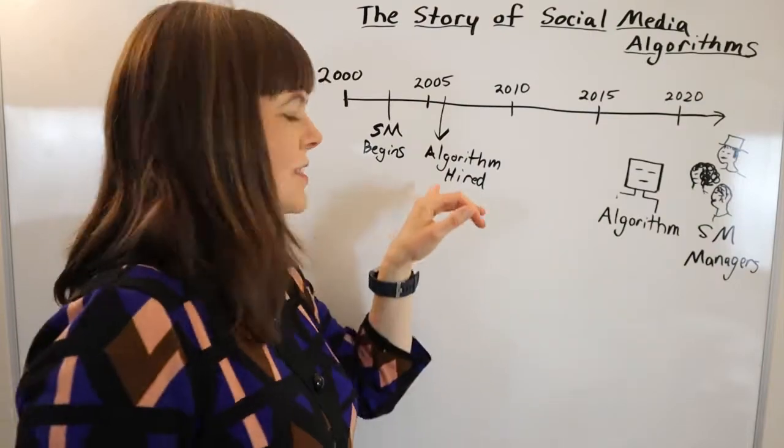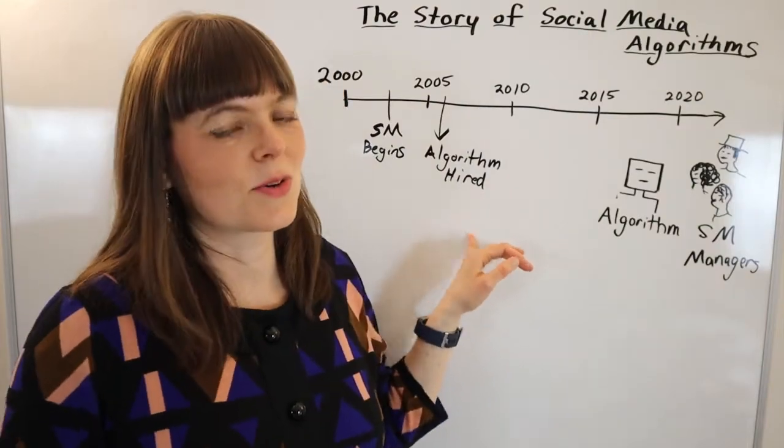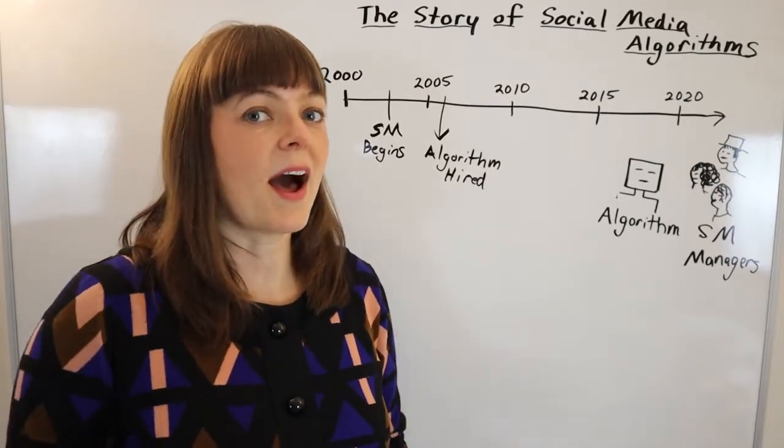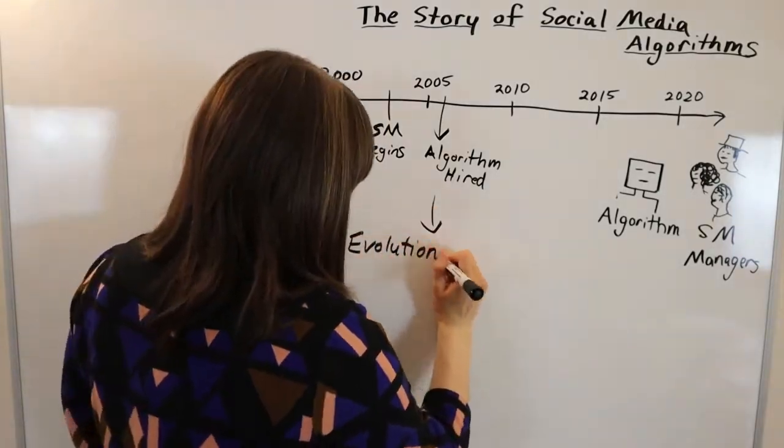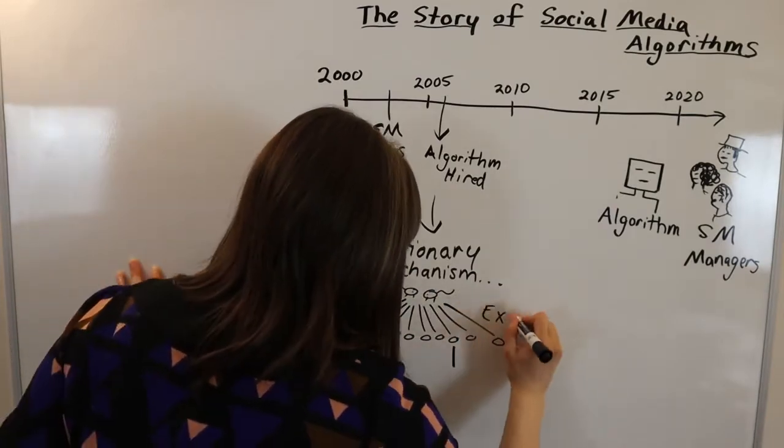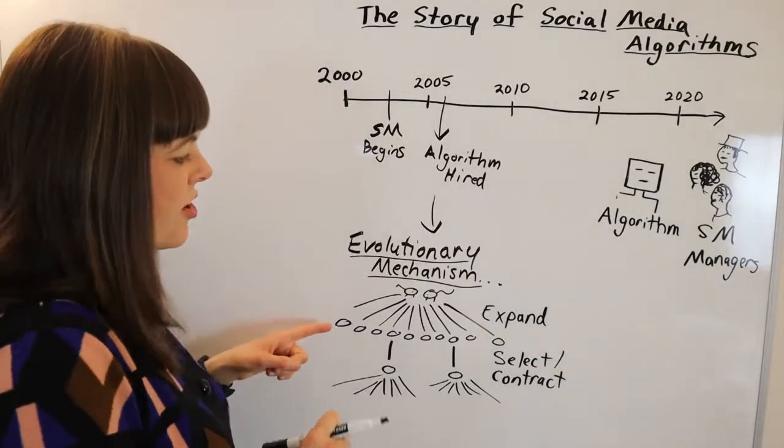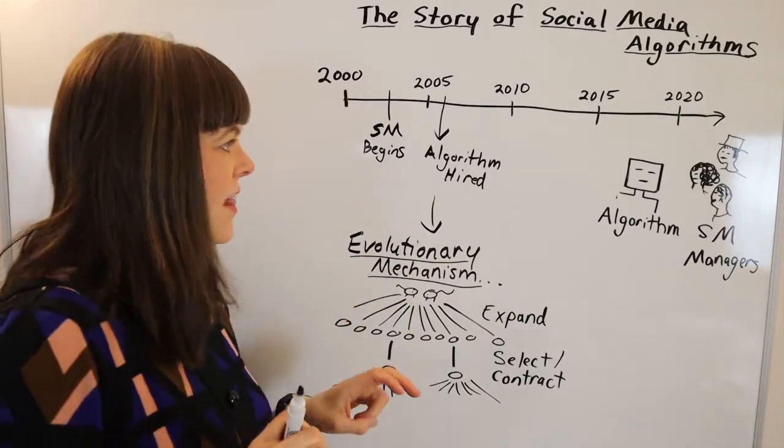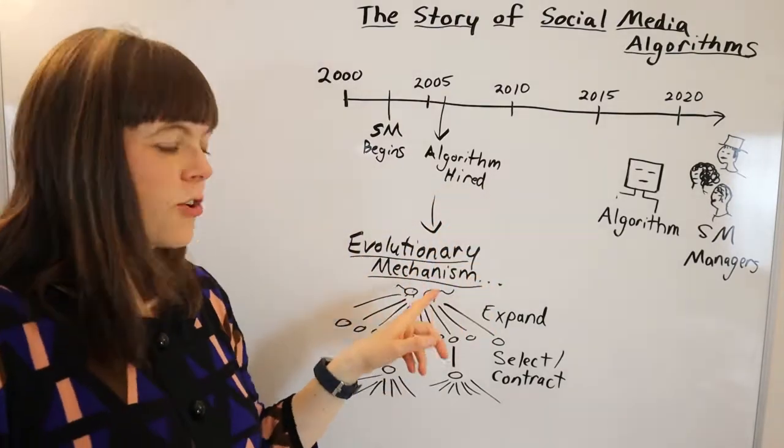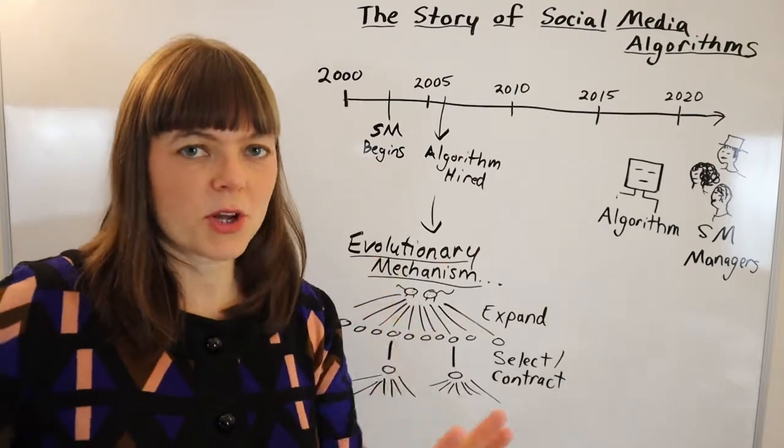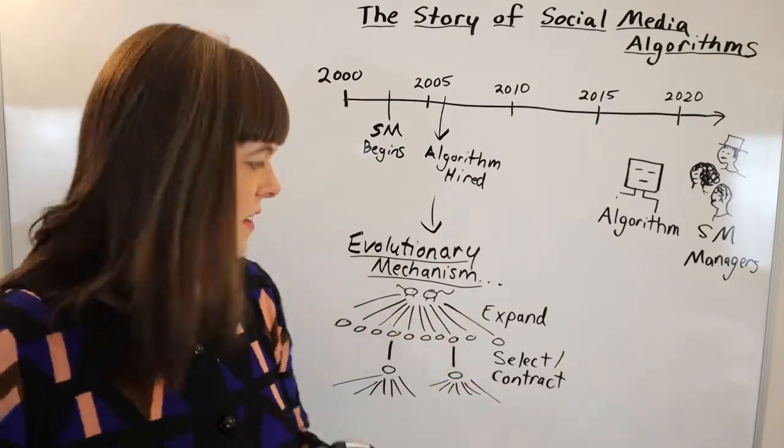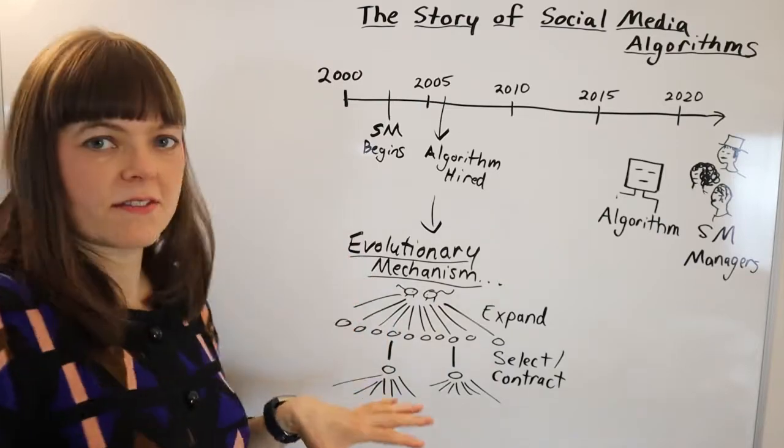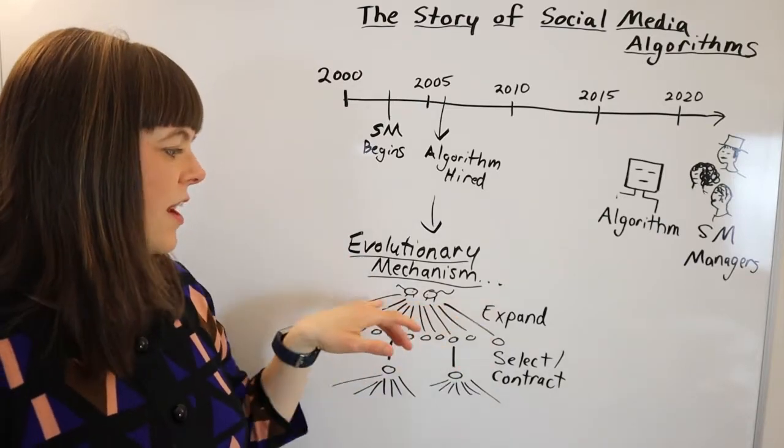Now the algorithms have a special tool that they like to use, which is an evolutionary mechanism. And this is the way I like to visualize it. The evolutionary mechanism is where you have some sort of parent generation, and with social media the parents are going to be content that's put in front of people's faces. Some content's put out there and there's an expansion of this content based on that generation.